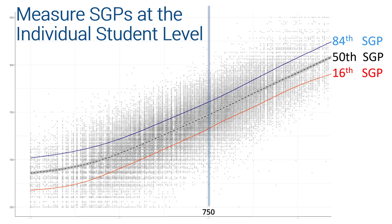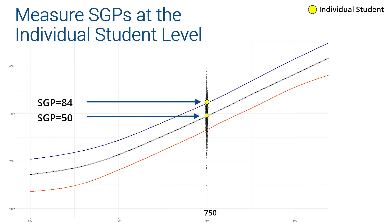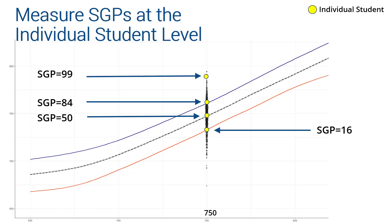Once all students across the state are plotted, cubic B-spline quantile regression is used to establish growth percentiles for a student by comparing a student's current year score to all students with the same score the previous year. Each student's PARCC score for the current year is compared to all other students across the state who had the same previous year's PARCC score. SGP models are computed separately for each grade level and subject. Graphically, this amounts to isolating a vertical slice of the data. For example, a student with a prior year score of 750 would be compared to all other students who also scored 750 last year. The 50th growth percentile is depicted by the black dotted line, the 84th SGP in blue, and the 16th SGP in red. An SGP of 50 indicates a student scored equal to or better than 50% of students that had the same score the previous year. This extends to all percentiles such as the 99th SGP and the 1st SGP.